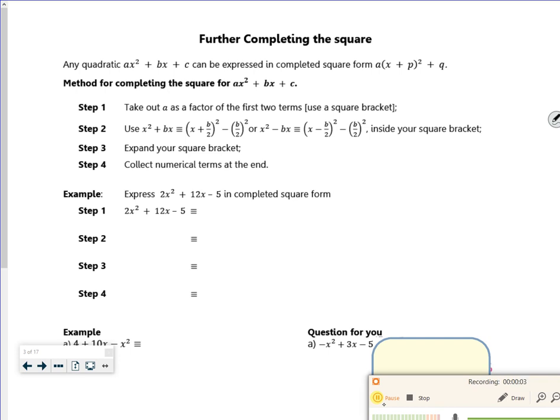Right then, are you ready? So this time, there's a number in front of the x squared and the coefficient of a is not one. I need to take that out as a factor first.